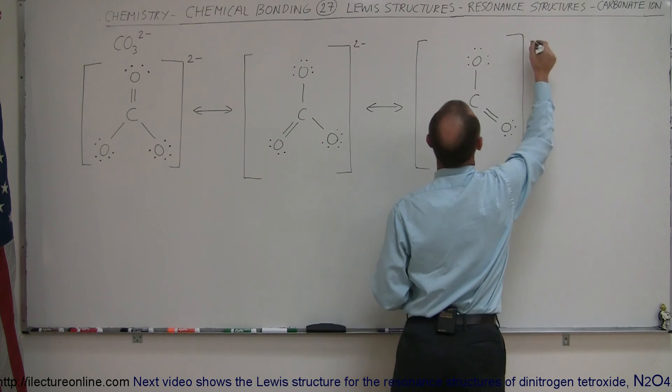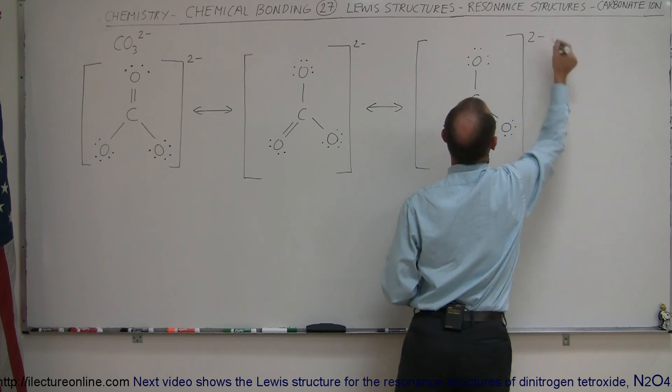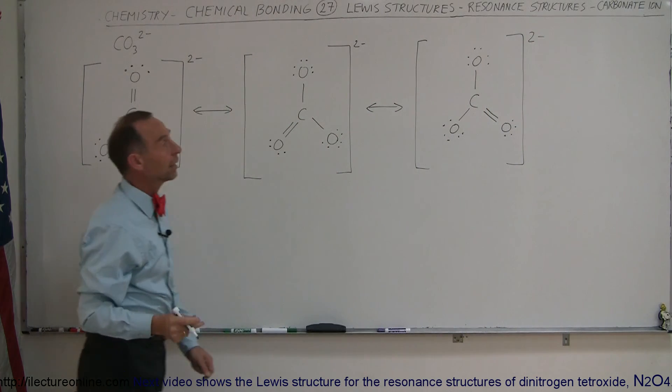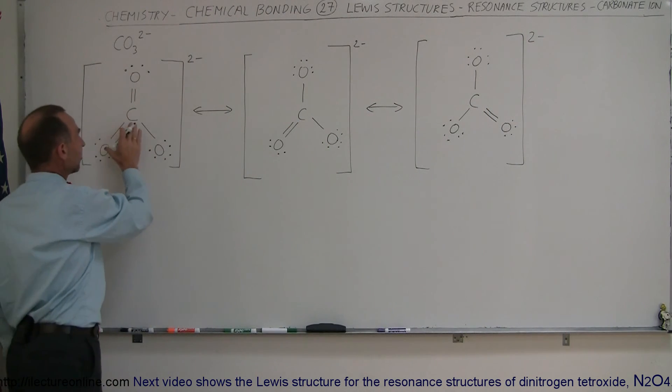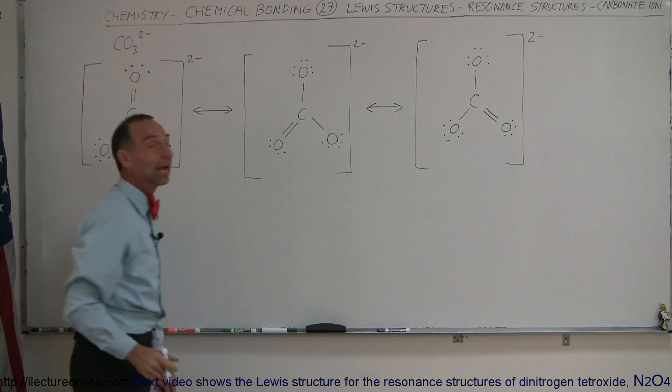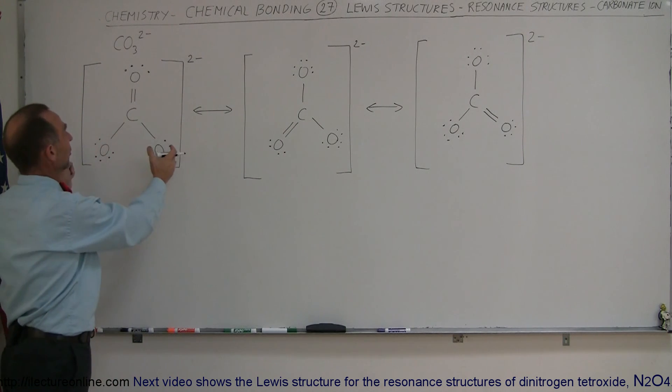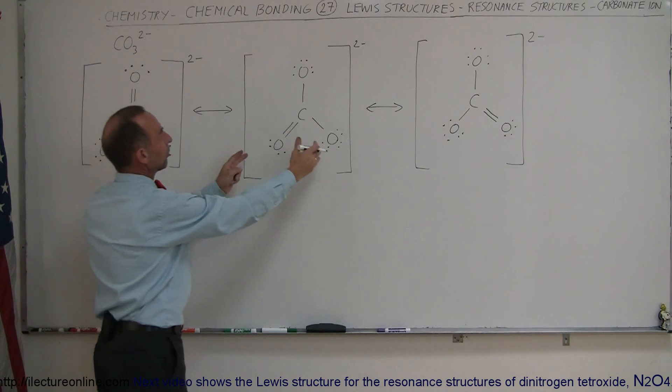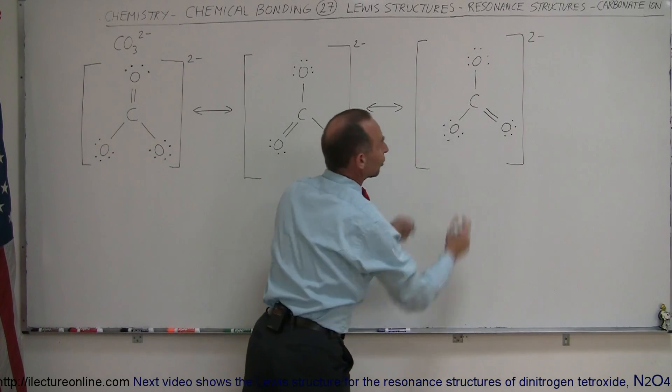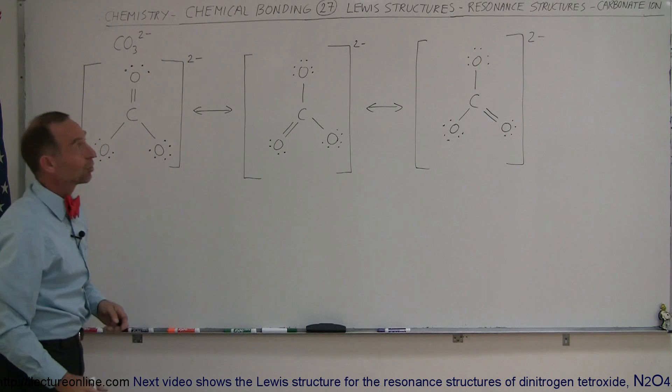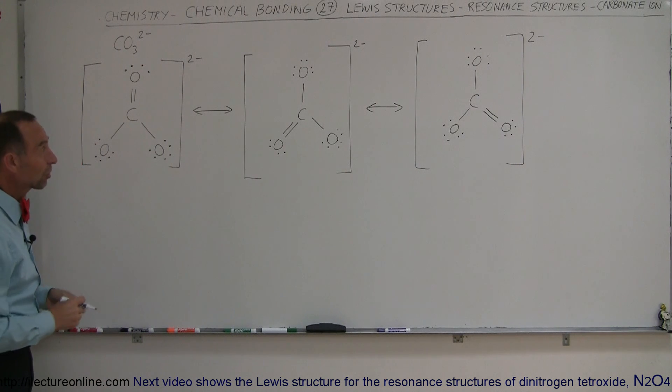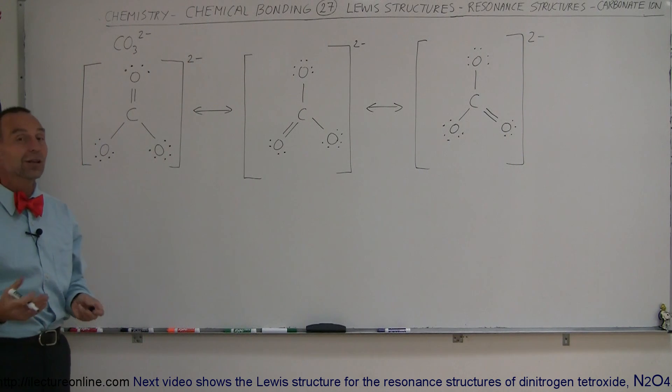And then this would be the third structure that this could be in. So the carbonate ion can exist like this, like this, or like this. In reality, what you'll find is that it actually spends one-third of the time looking like this, one-third of the time looking like this, and one-third of the time looking like this. So that's what we mean by resonance structure, and the carbonate ion is a really good example for that.